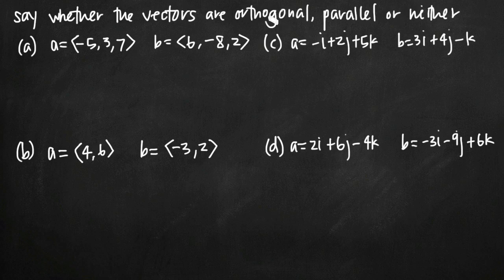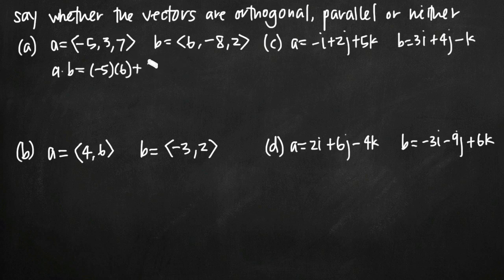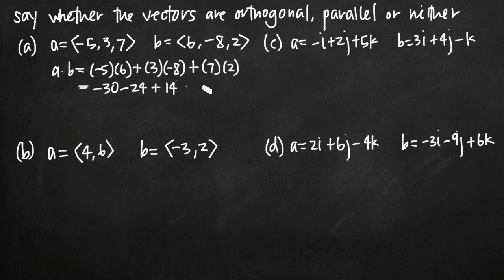The first thing we want to do is check to see whether these vectors are orthogonal to one another, and the way that we do that is by finding the dot product of the vectors. Remember that the dot product has us multiply the components of the two vectors together and then add all of those products. So the dot product of a and b is equal to negative five times six, plus three times negative eight, plus seven times two. If we simplify this, we get negative 30 minus 24 plus 14, which is equal to negative 40. Since that does not equal zero, these vectors are not orthogonal.